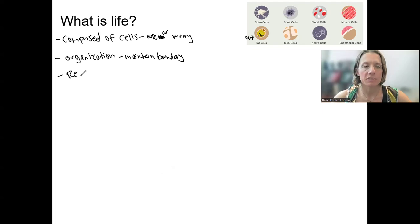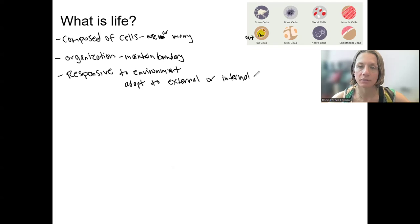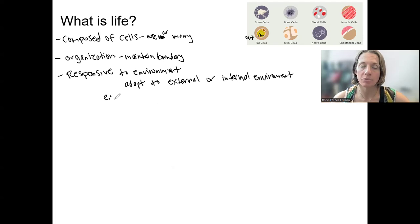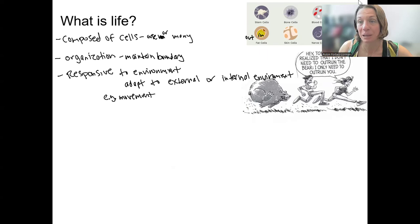A big one is responsiveness — being responsive to the environment. This means that we can adapt to changes in our external environment or our internal environment. This allows us to do things like obtain nutrients and escape danger. Movement is one type of being responsive, and in humans, that involves all kinds of muscles and bones working together to allow us to move.